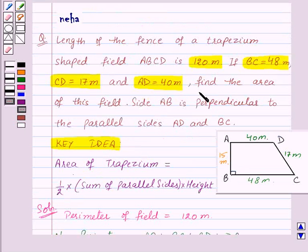Now we need to find the area of this field, that is, the area of trapezium ABCD. We know the formula for area of trapezium, so we will substitute the values. The parallel sides are AD, which is 40 meters, and BC, which is 48 meters. Height is AB, as AB is perpendicular to AD and BC. AB, which is 15 meters, is the height of this trapezium.